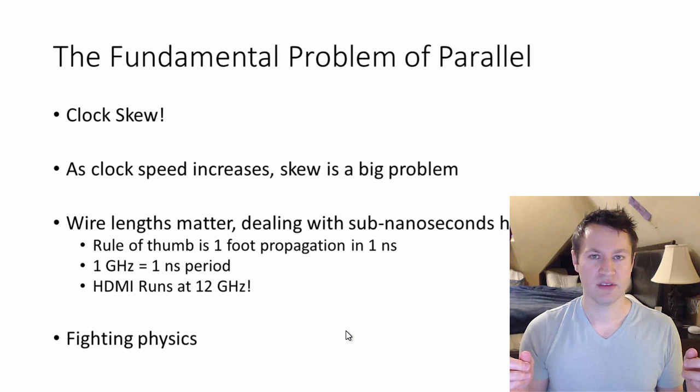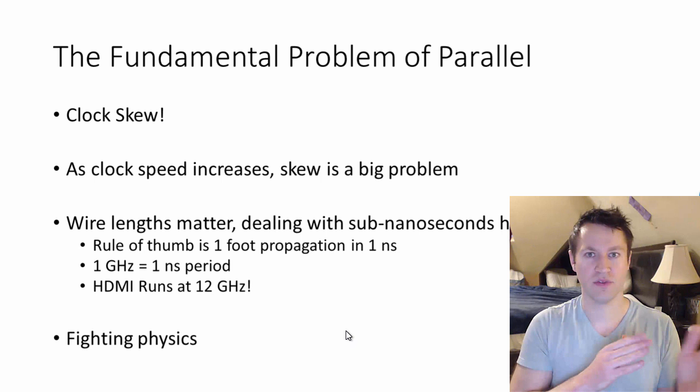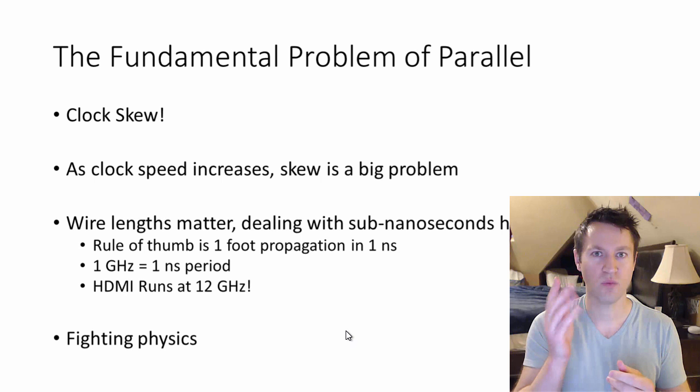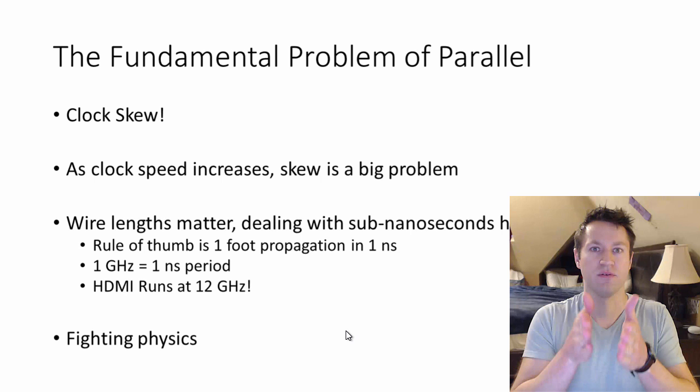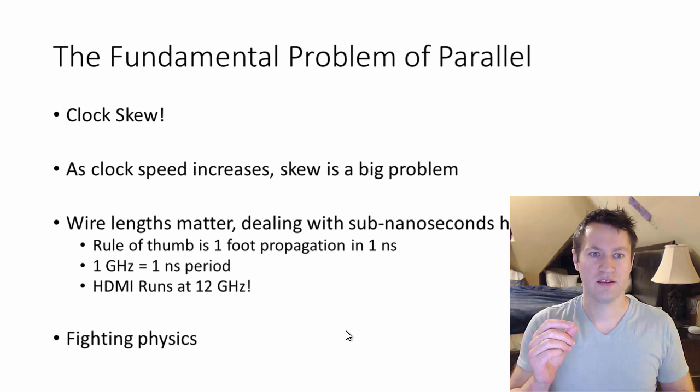If you have a one gigahertz data rate, one nanosecond is the period of a bit. So that means that every foot has a new bit on it. HDMI runs at 12 gigahertz. So now every inch has a new bit. If you imagine an HDMI cable, it's a foot long, you can have 12 bits on that cable all at the same time. What ends up falling apart here is that the edges of your clock and synchronizing all those pieces of those parallel data interfaces together becomes impossible. Even if your wires are a little bit—if one wire is a little bit longer than its neighbor, then data arrives at different times at your receiver.